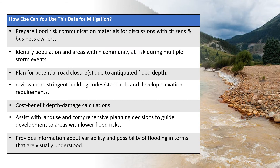Depth grids can be used to prepare flood risk communication materials for discussions with citizens and business owners. They can be used along with local data to identify populations and areas within the community that could be at risk during multiple storm events. They also help plan for potential road closures due to anticipated flood depths, and support review of more stringent building codes and standards.